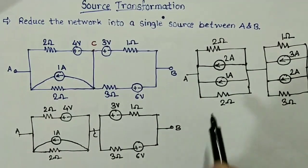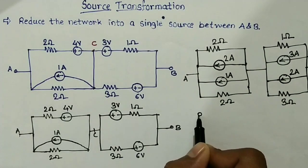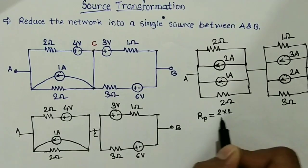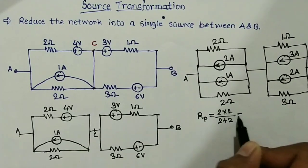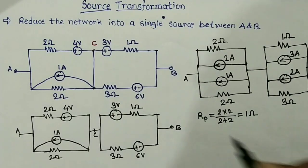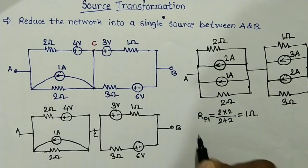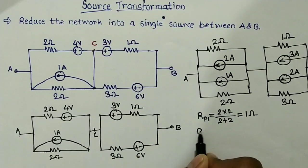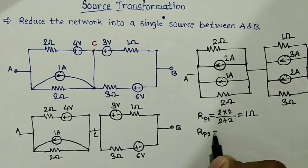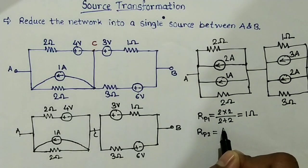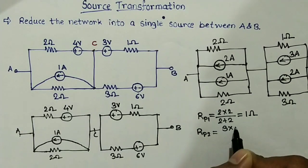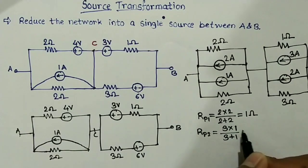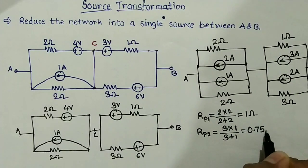Now, these two 2 ohm resistances are in parallel, so let us replace them by a single equivalent resistance: Rp1 equals 2 multiplied by 2 divided by 2 plus 2, which equals 1 ohm. Now, this 1 ohm and this 3 ohm resistance are in parallel, so let it be Rp2, which equals 3 multiplied by 1 divided by 3 plus 1, which equals 0.75 ohm.